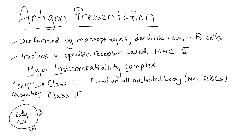Does the immune system ever destroy self cells? Yes — it's called autoimmune disease. For example, in multiple sclerosis, the myelin coating of neurons is destroyed by the immune system. That is a disorder — a pathology where the immune system destroys its own cells, not a normal thing. We won't go into all the details, but it's important to be aware of these recognition receptors involved in self-identity. All of our cells have these class 1 receptors.